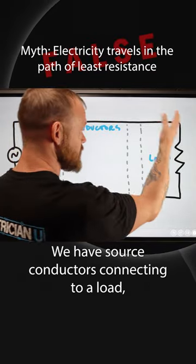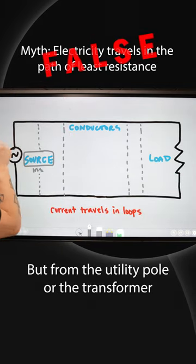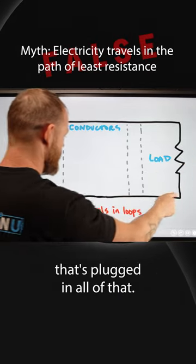Right? We got a source, we got conductors connecting to a load, but it makes a complete loop. Somewhere in between here is our panel, but from the utility pole or the transformer, all the way through to like a dryer or vacuum cleaner that's plugged in, all the way back.